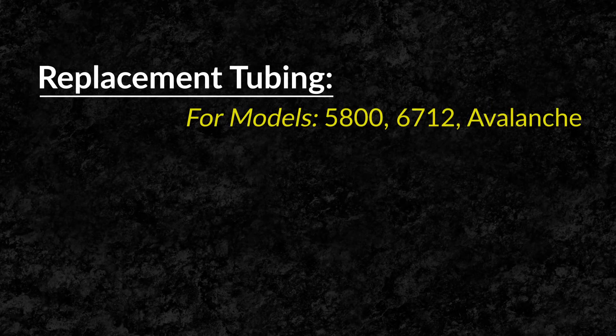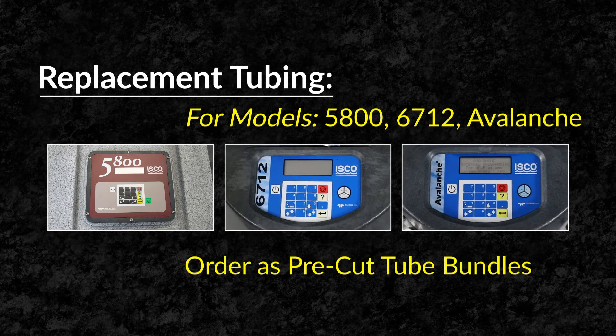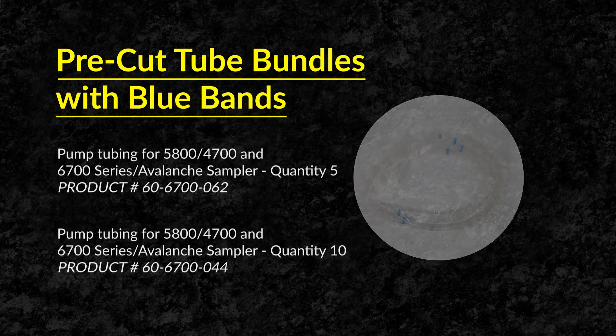Replacement tubing for models 5800, 6712 and Avalanche come in packages of pre-cut tube bundles.